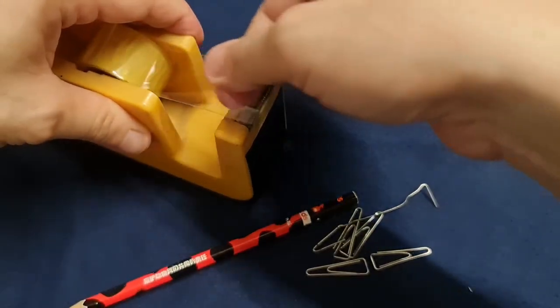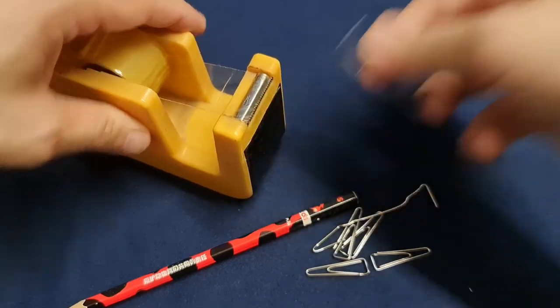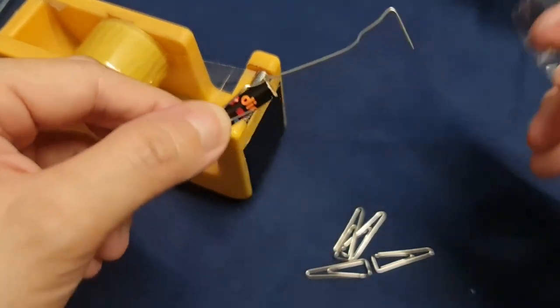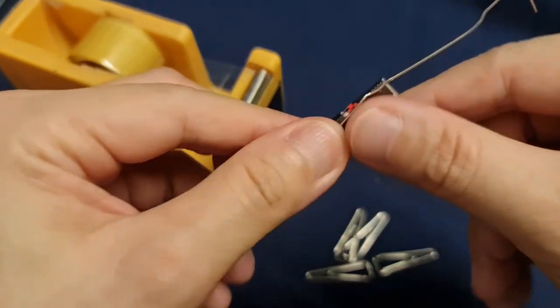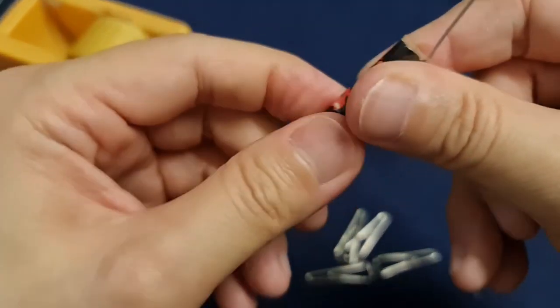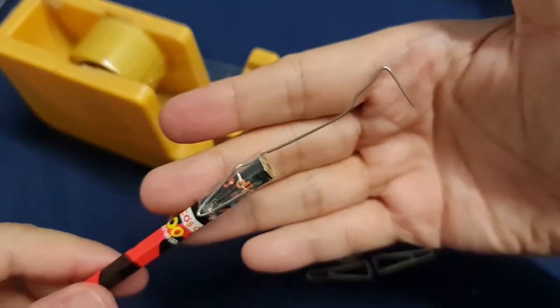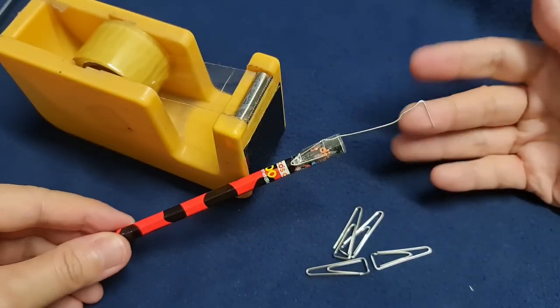Then take some sellotape. Line it up nicely. Then stick. And there you have it, your own wick dipper.